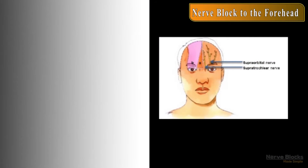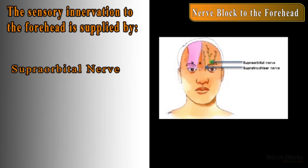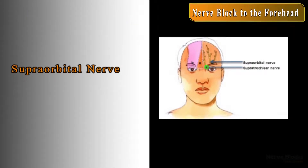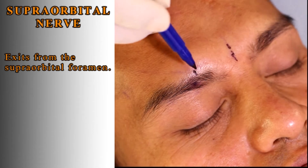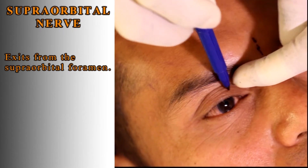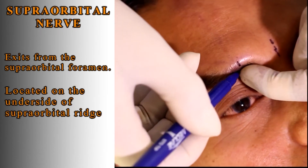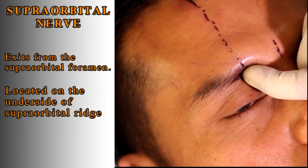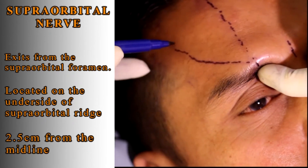Nerve Block to the Forehead. The sensory innervation to the forehead is supplied by the supraorbital nerve and the supratrochlear nerve. The supraorbital nerve exits from the supraorbital foramen. It is located on the underside of the supraorbital ridge, 2.5 cm from the midline.